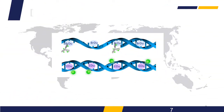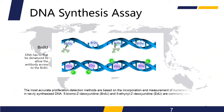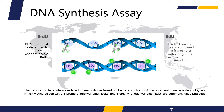The most accurate proliferation detection methods are based on the incorporation and measurement of nucleoside analogs in newly synthesized DNA. 5-bromo-2-deoxyuridine (BrdU) and 5-ethynyl-2-deoxyuridine (EdU) are commonly used analogs.